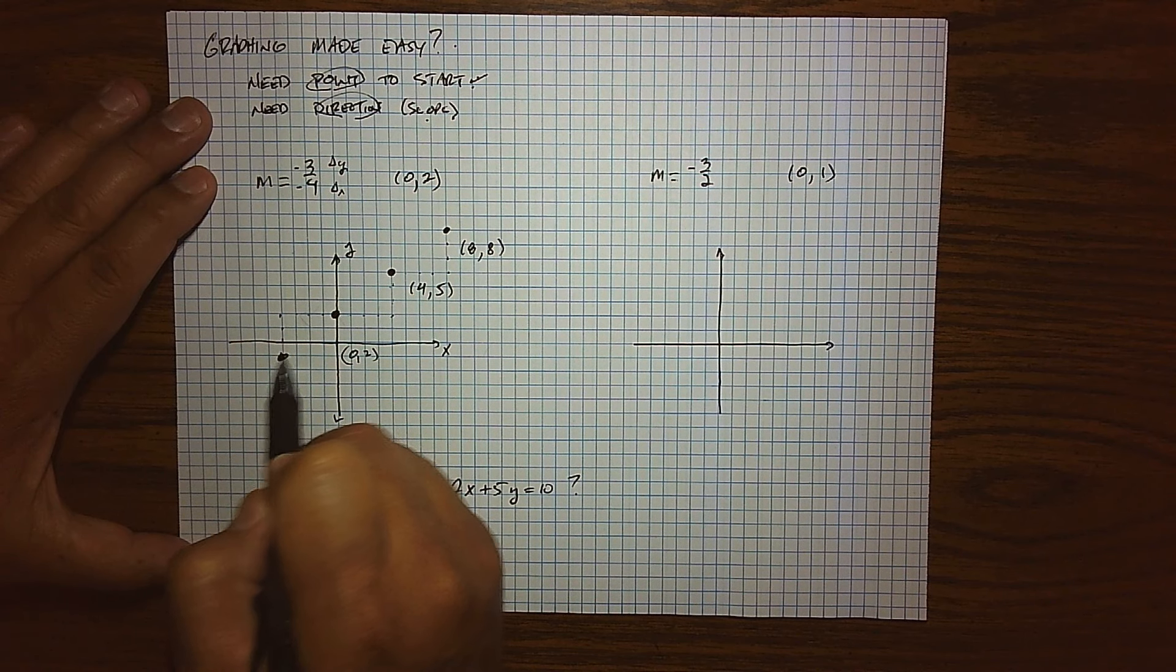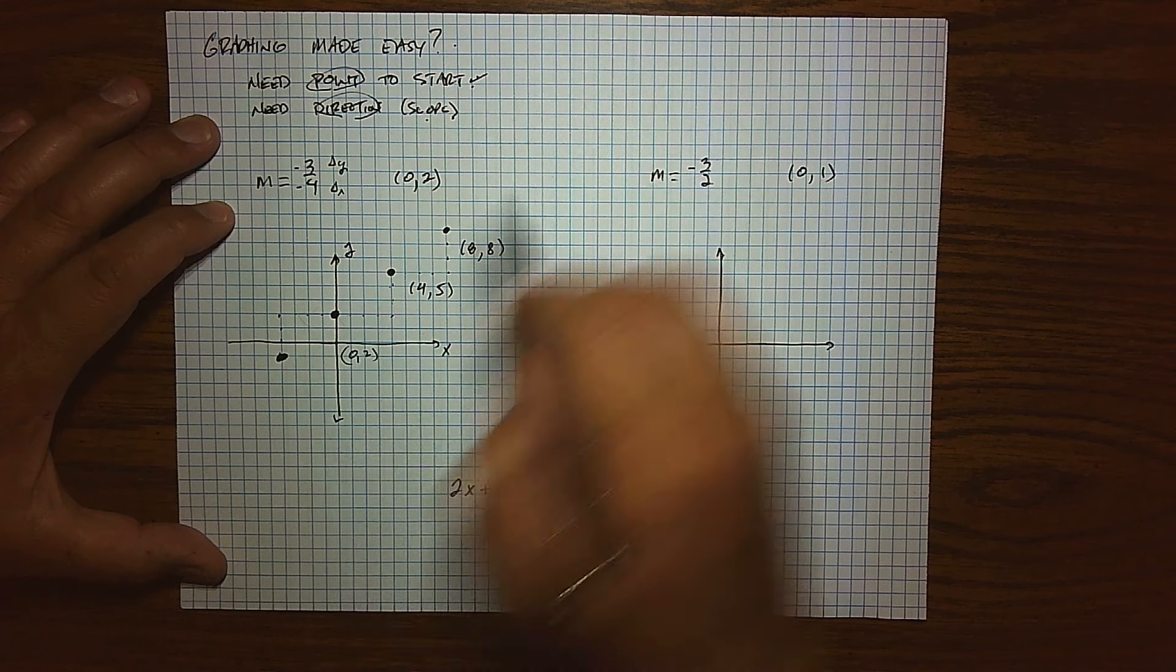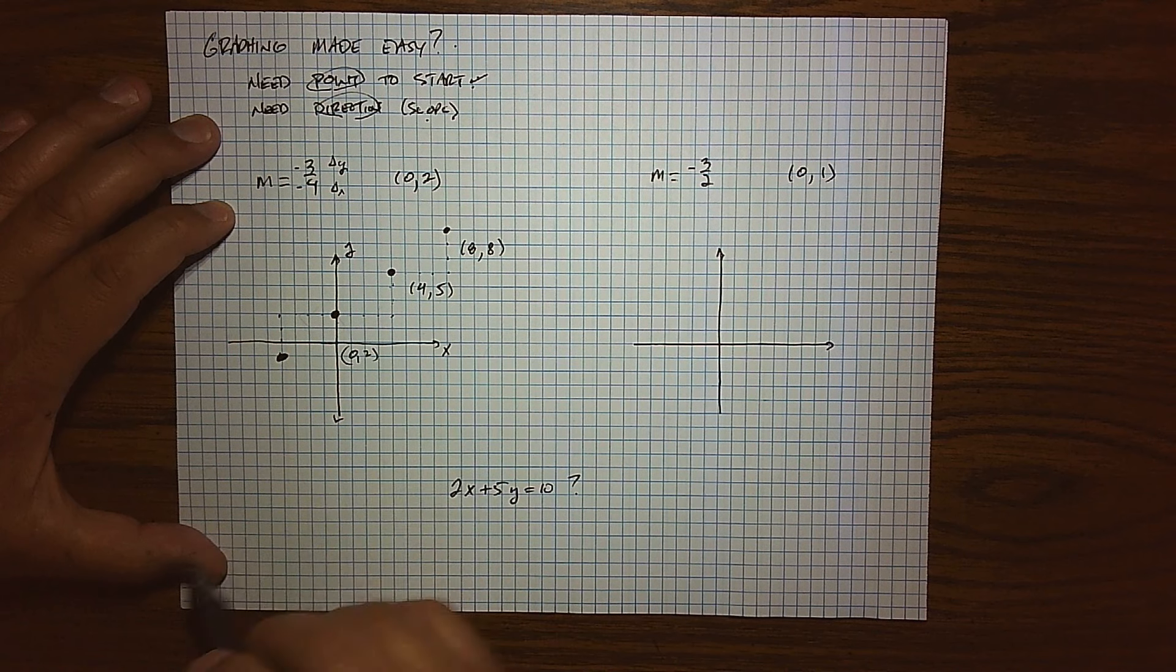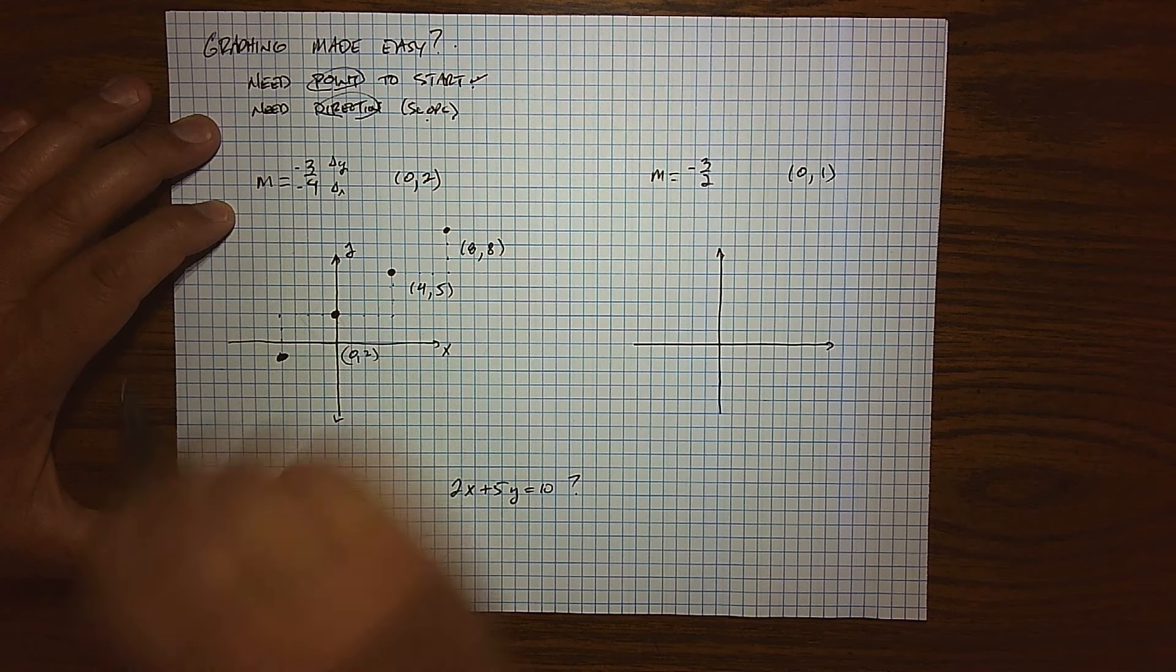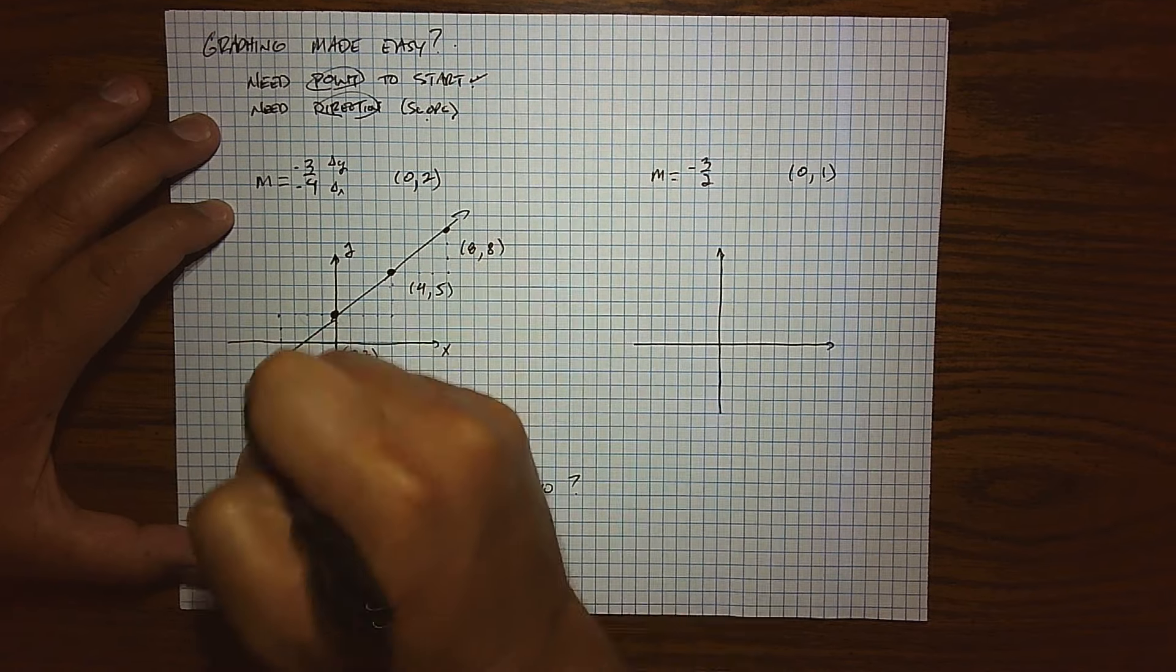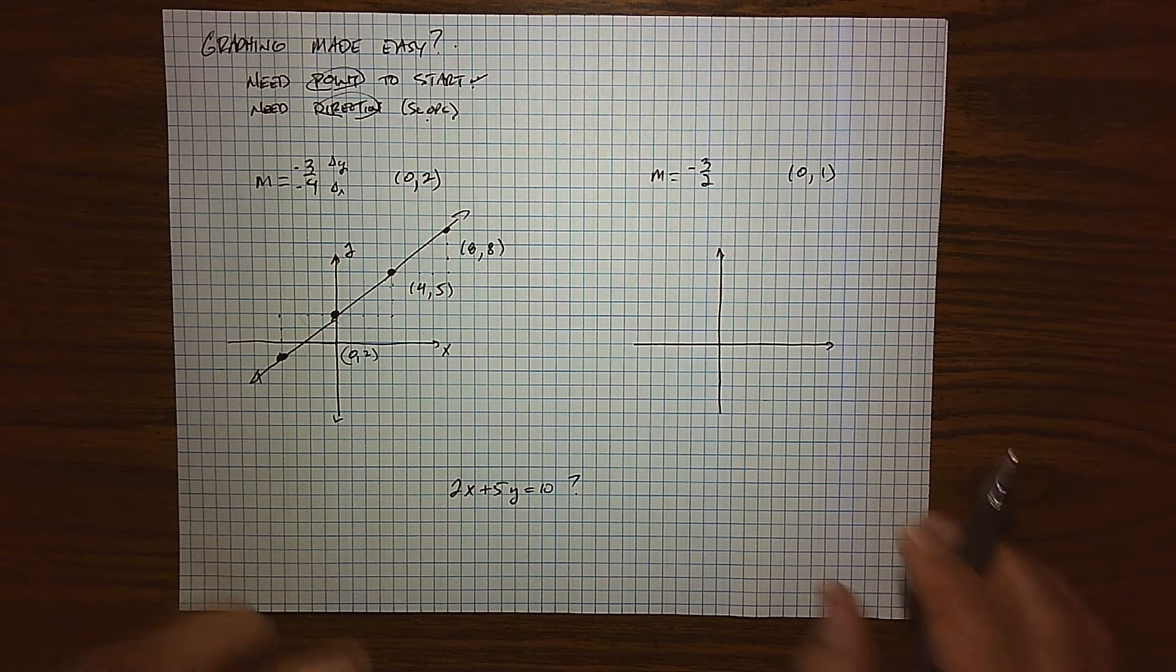And so notice in a span of just a few seconds, I've been able to generate 4 solution points. One was given, and the other two I found with my direction. And so that's kind of the beauty of slope, that it helps us with the direction, it helps us find another data point. So graphing made easy.